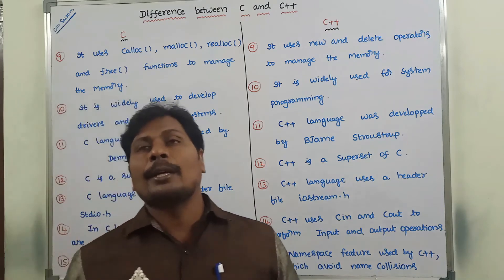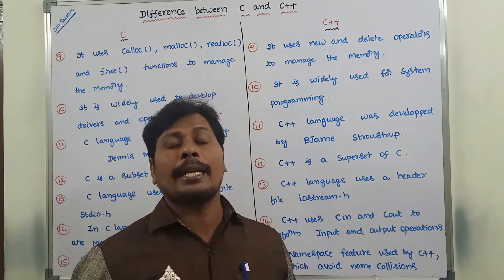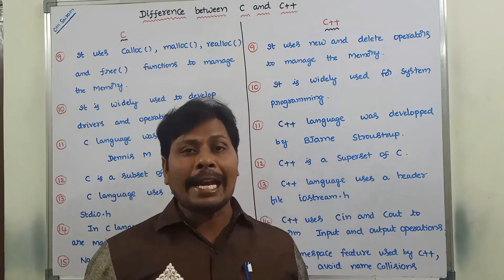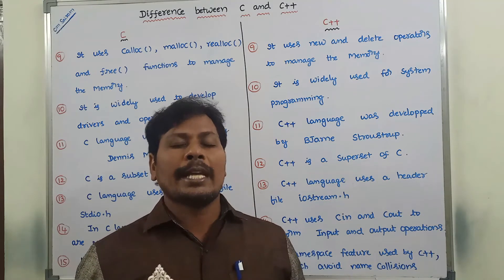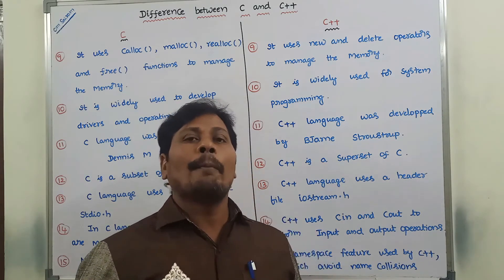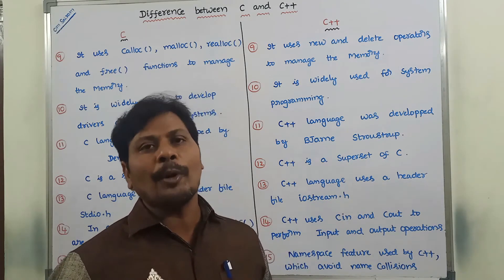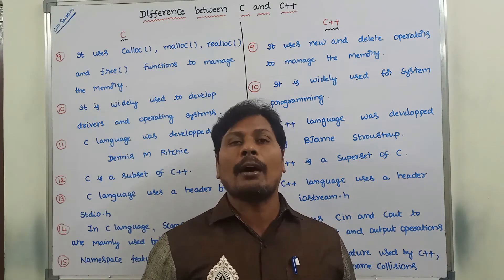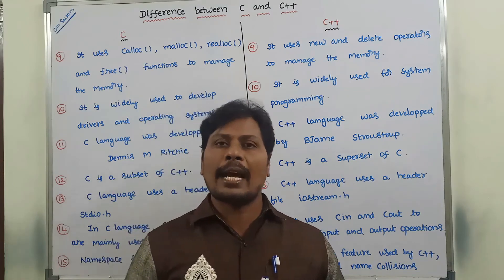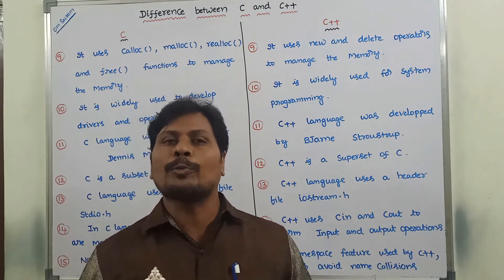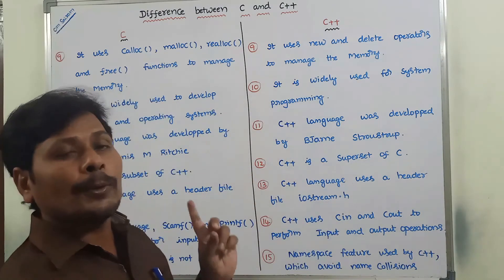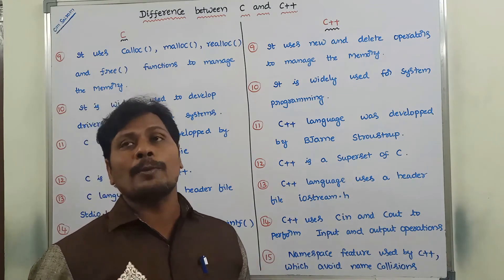In C language, to perform input/output operations — reading input from the keyboard and writing output on the monitor — we use two functions: scanf, which is the standard input function, and printf, which is the standard output function. Whereas in C++, we use cin and cout. cin is standard input and cout is standard output.